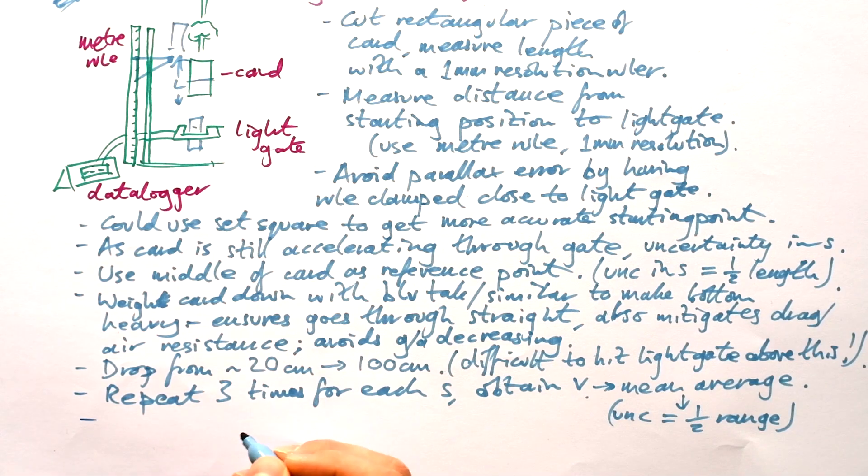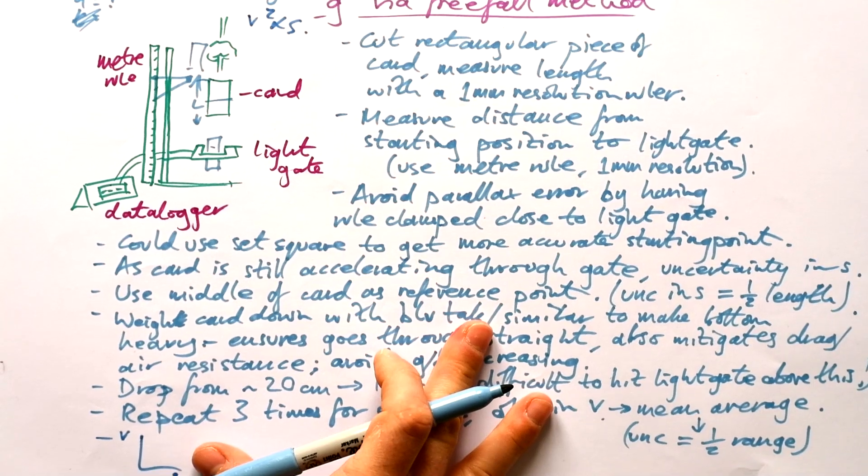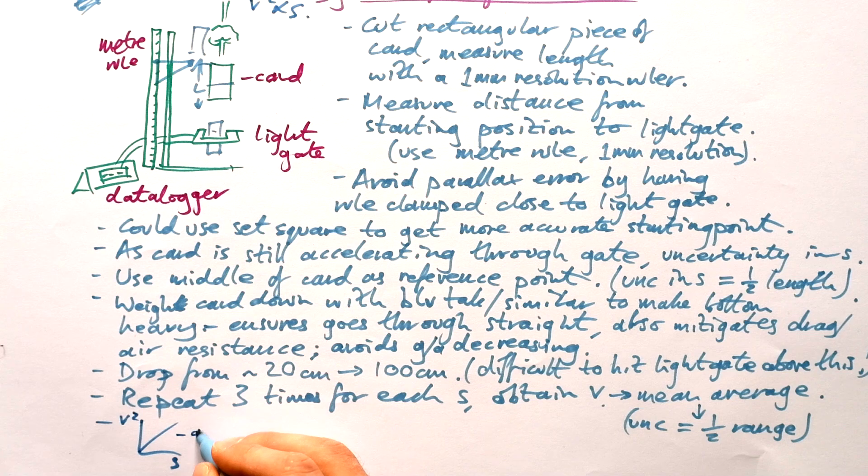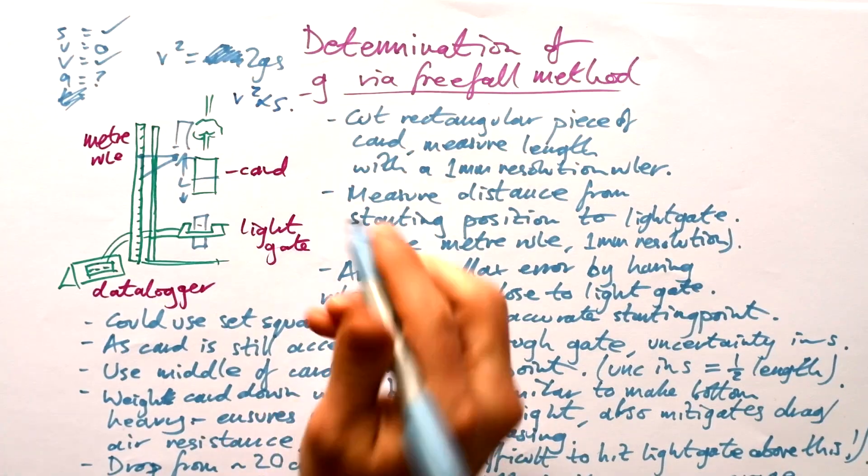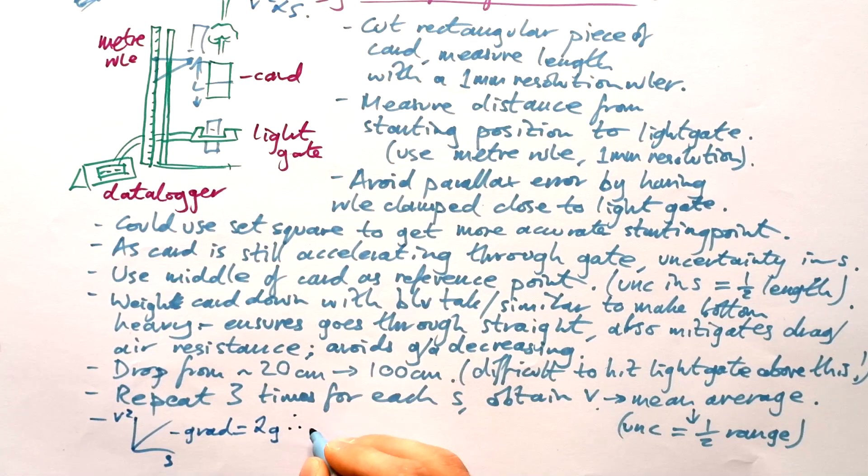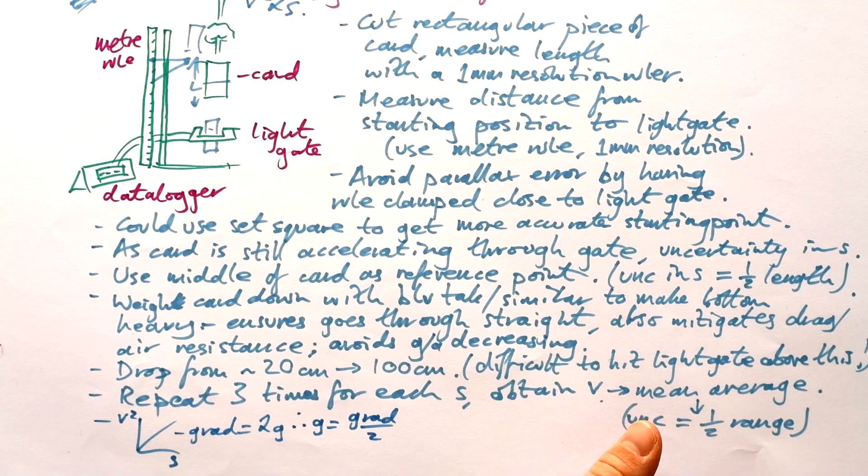So we have our values for V squared and S. We can't plot a graph of V against S because V isn't proportional to S, it's V squared that's proportional to S. So there we go. Get a nice straight line. The gradient of this is going to be equal to, well, if I rearrange this, V squared over S, that gives us 2g. Therefore g should be our gradient divided by two. So you should end up with a gradient of something like 20 and then divide by two to get about 9.8.